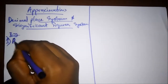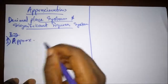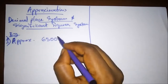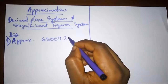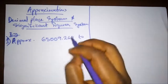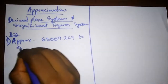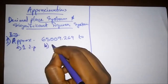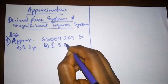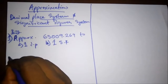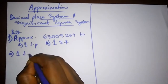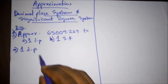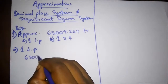Example one: approximate 65009.2692 — part (a) to one decimal place, and part (b) to one significant figure. Let's solve part (a), one decimal place. In approximating to a decimal place, this is what happens.